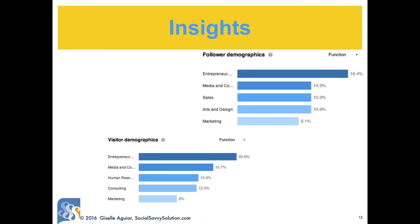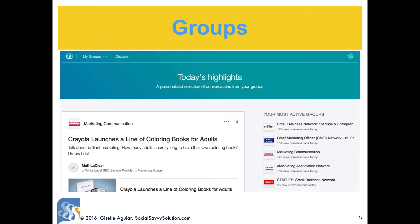Company page insights give you some information about followers and visitors: position, industry, company size, seniority, and function. At this time they don't provide gender, age, or location.